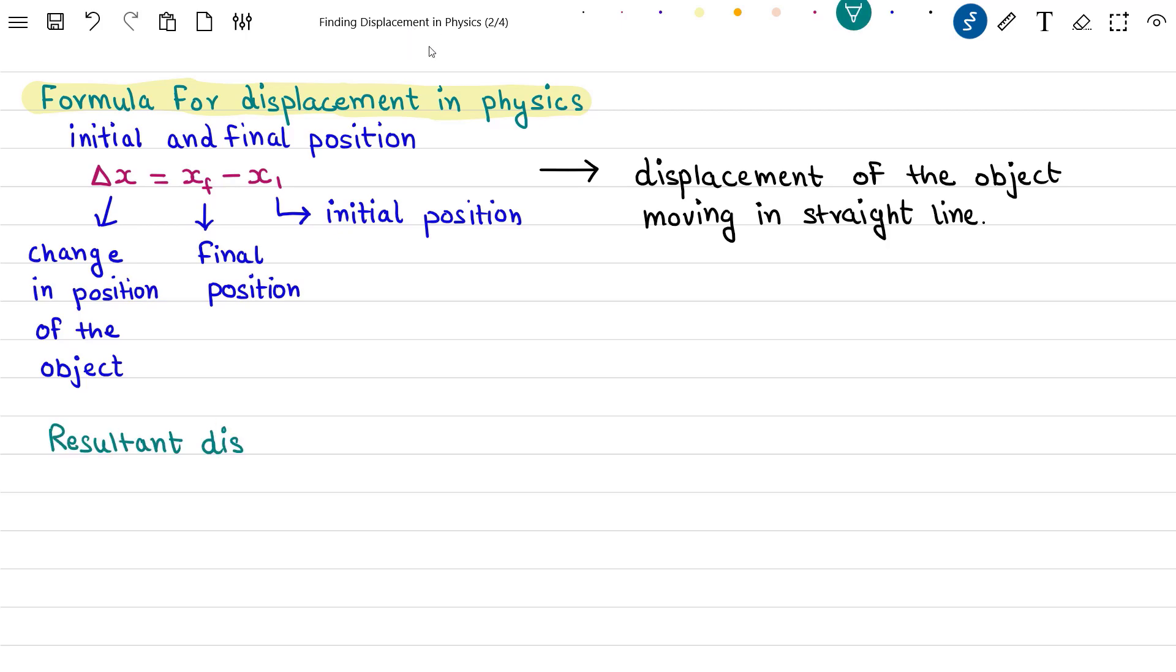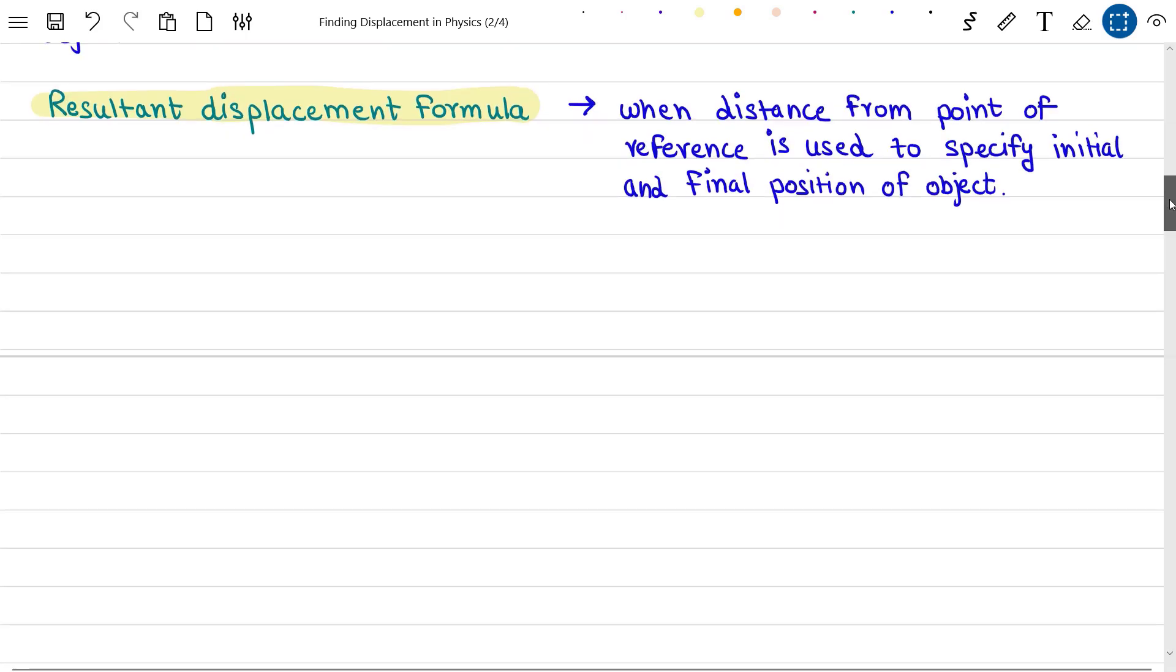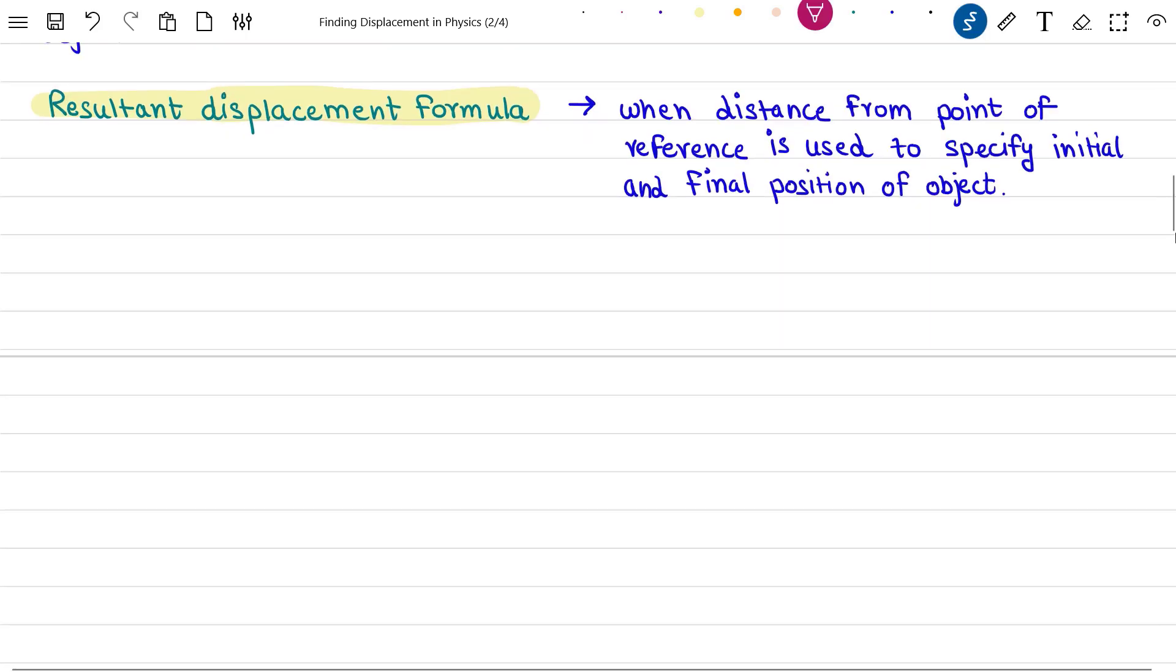Next we will look at the resultant displacement formula. This formula is used when distance from a point of reference is used to specify initial and final position of an object. Despite the fact that distance and displacement are not the same thing,